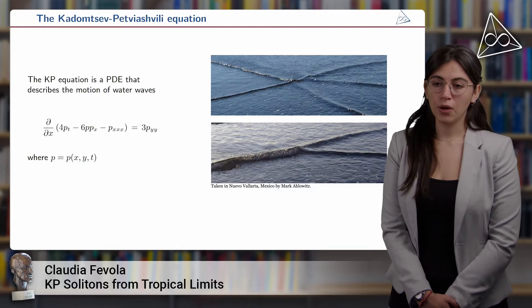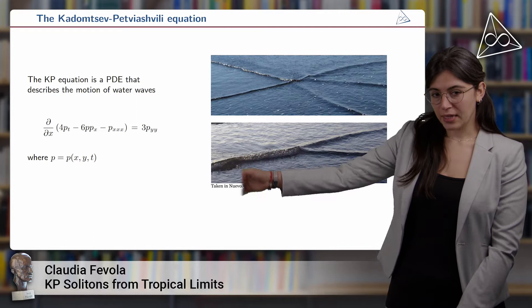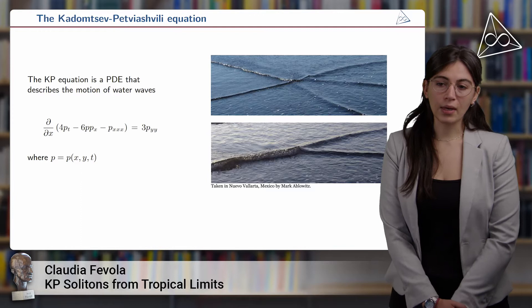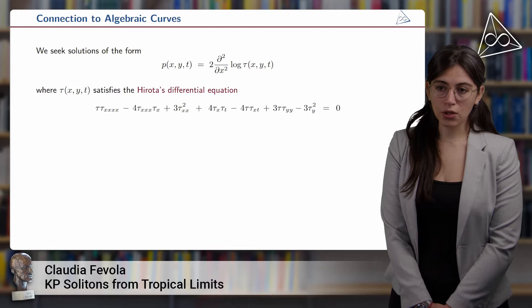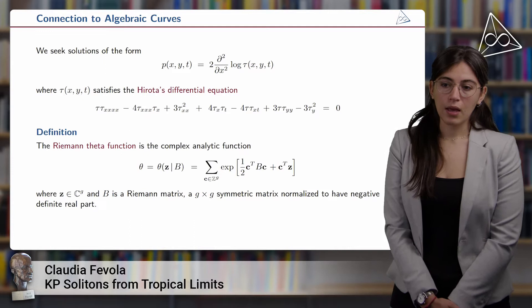The object of study is the KP equation, which is a partial differential equation that describes the motion of water waves, like the one in the picture. Here the function p is a function in three variables, meaning two space variables x and y, and one time variable t. And we seek solutions of this form, where the function tau satisfies the so-called Hirota differential equation.